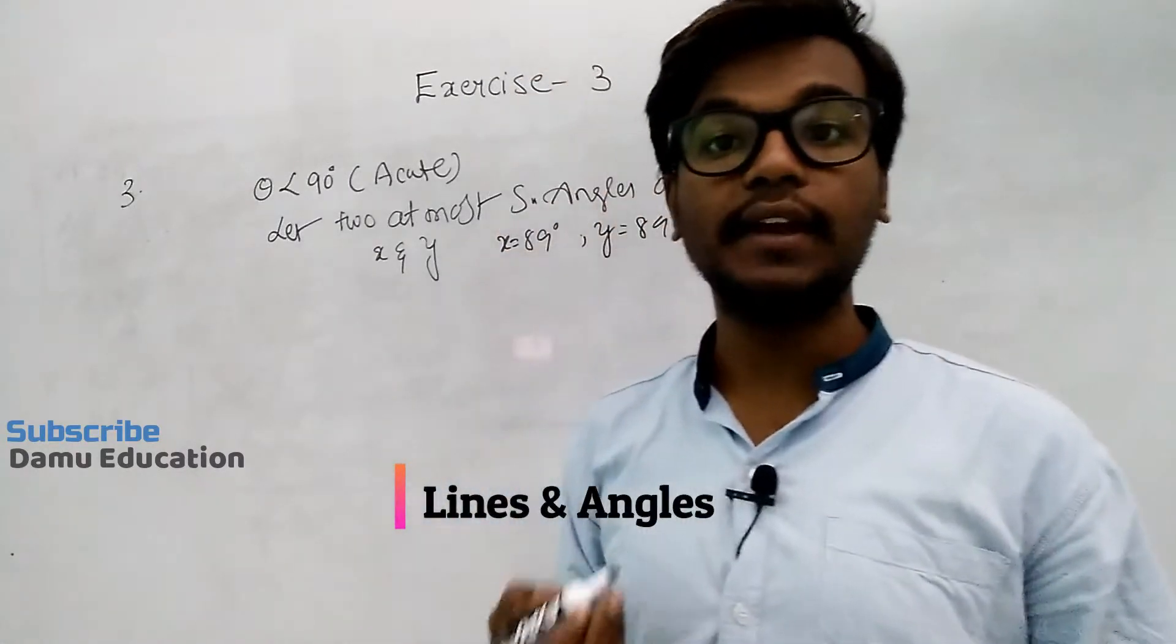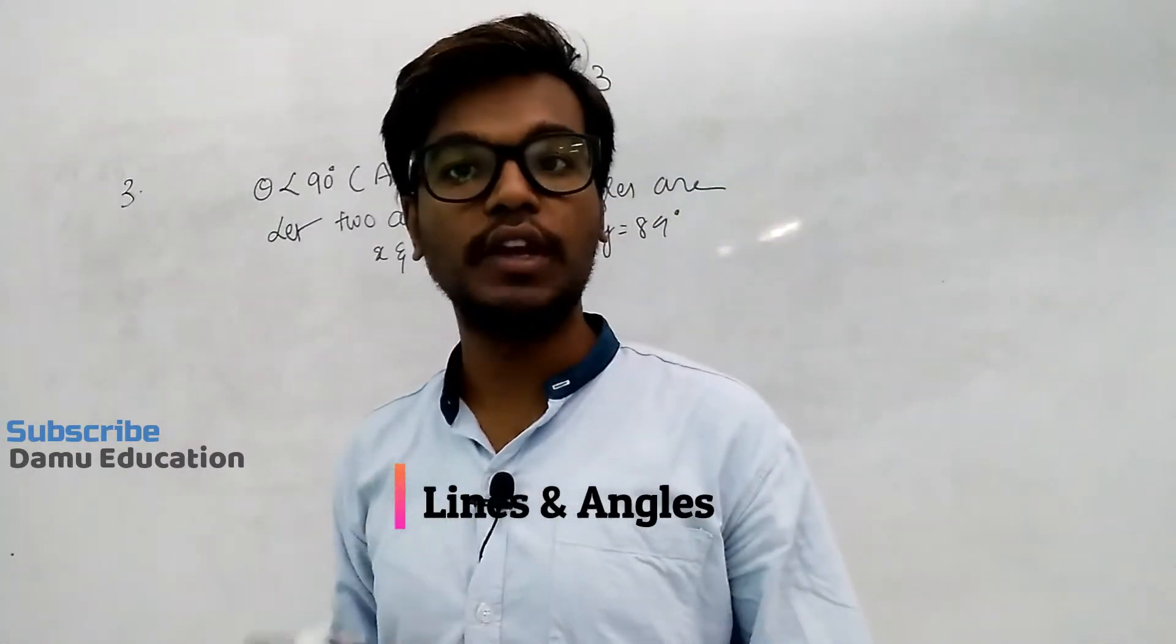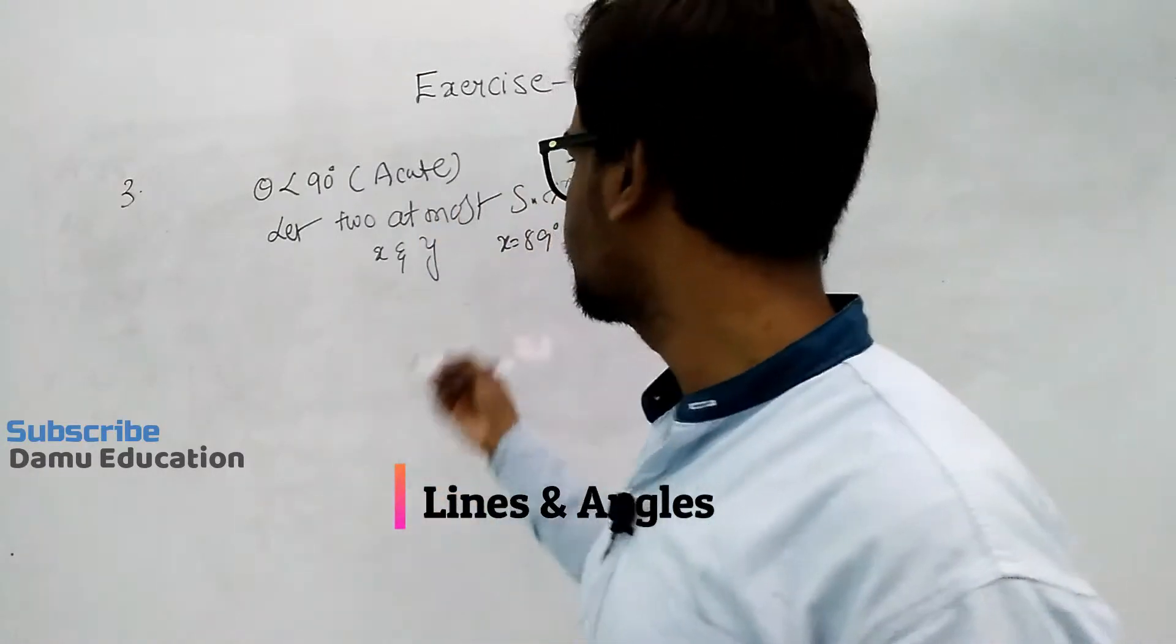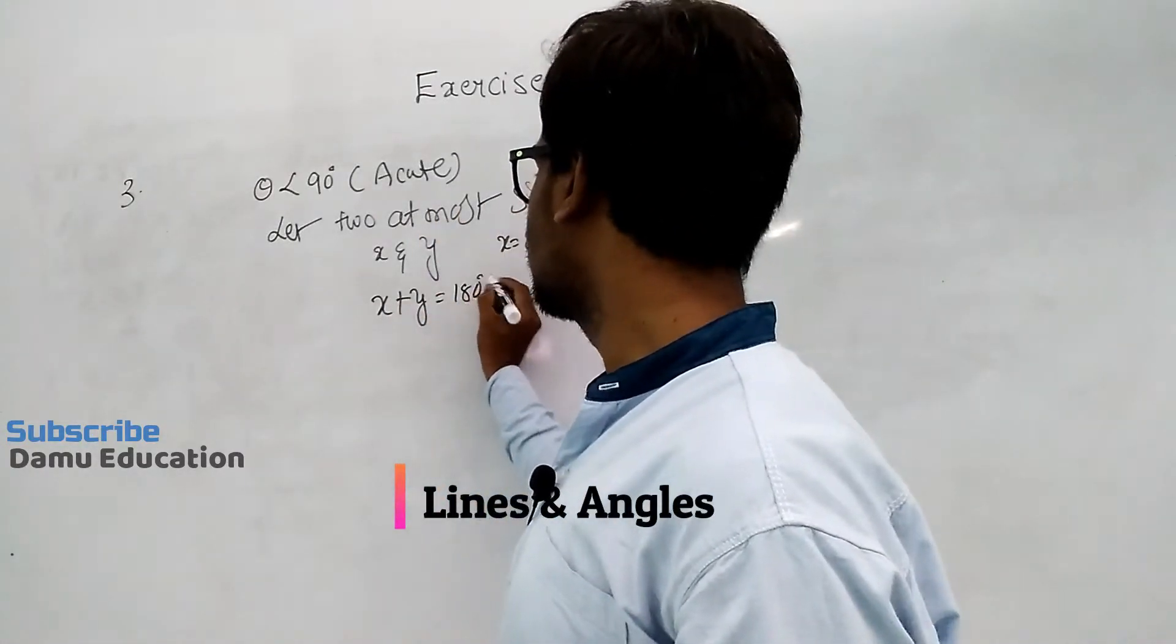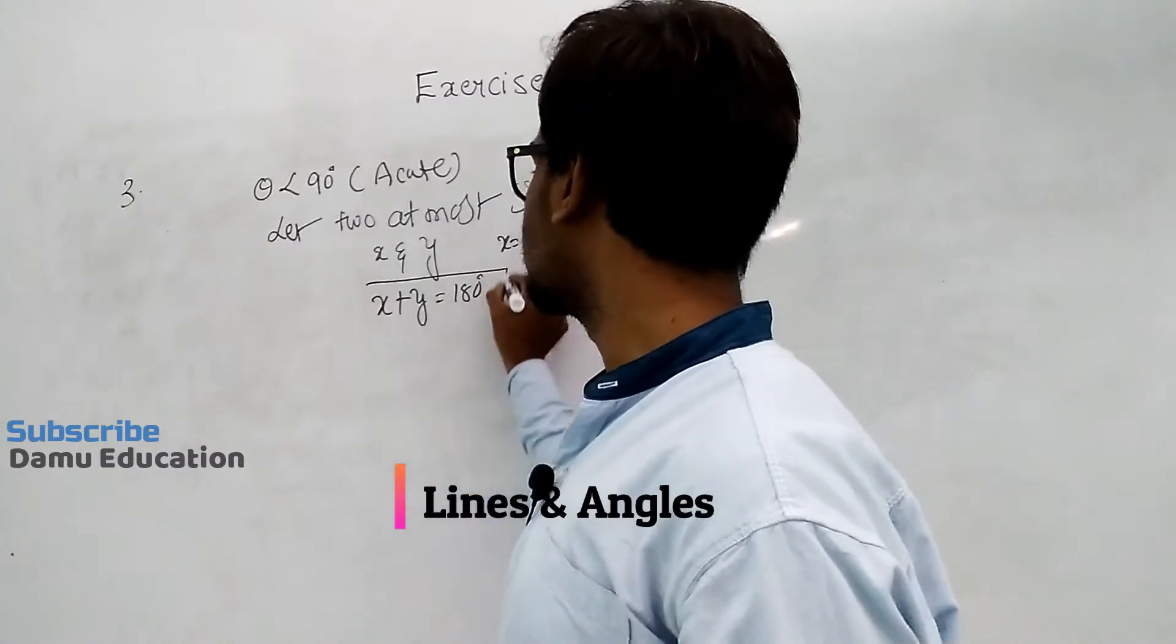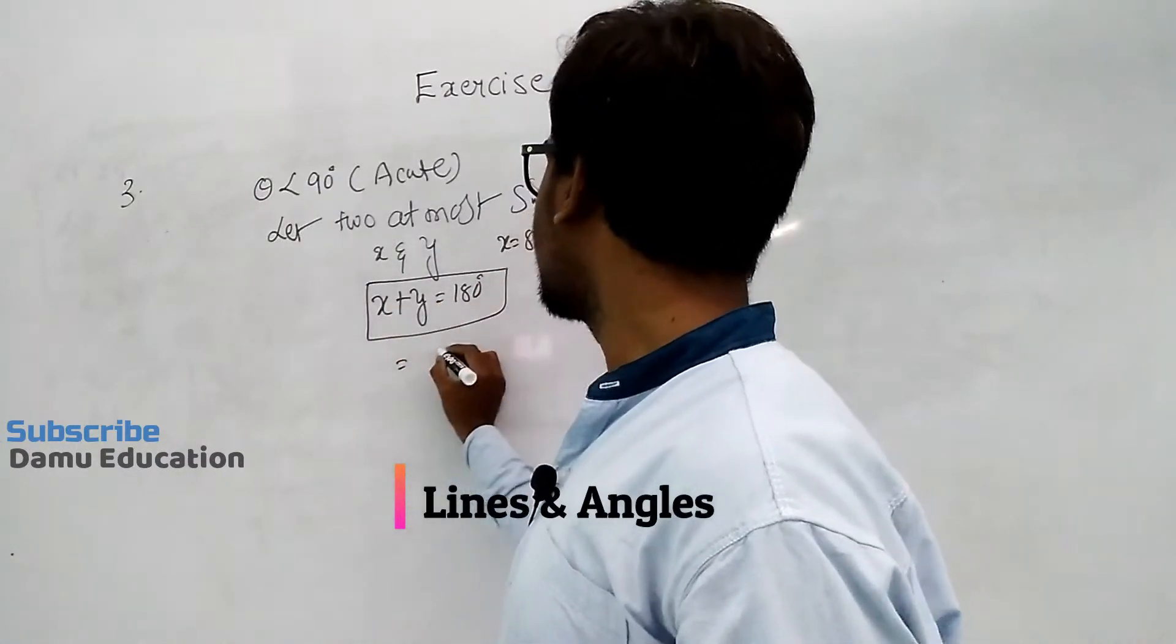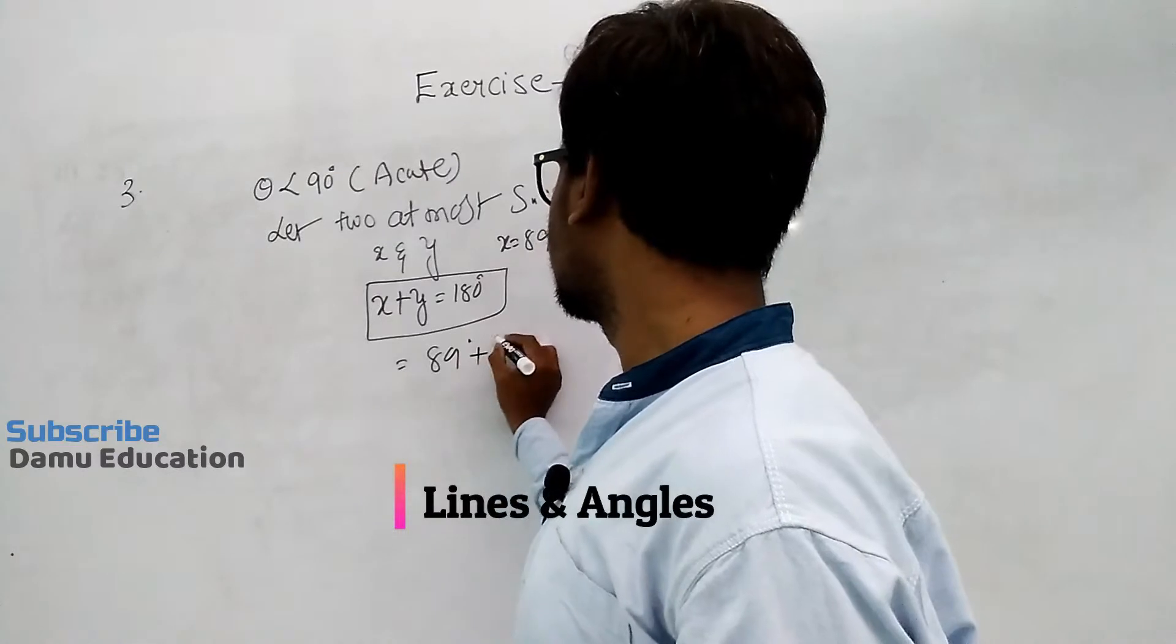If you add both angles, we should get 180 degrees. Let's check: x plus y equals 180. This is the condition for supplementary angles. Just add 89 plus 89.